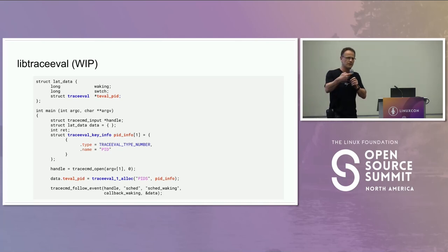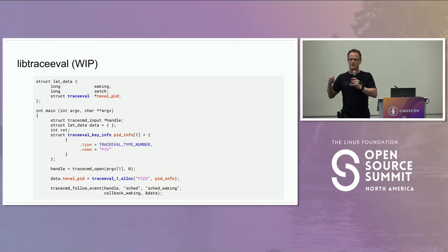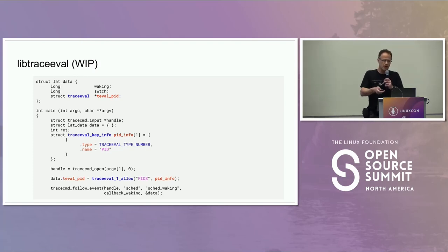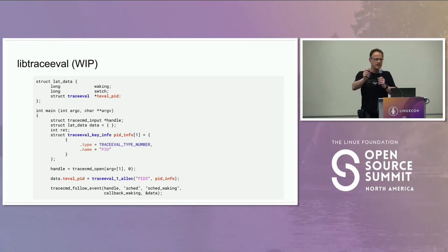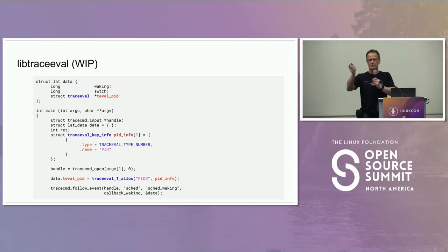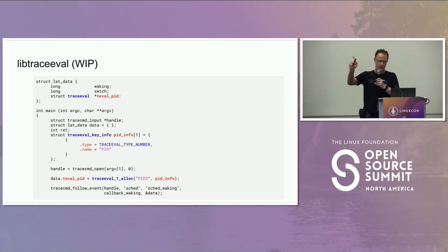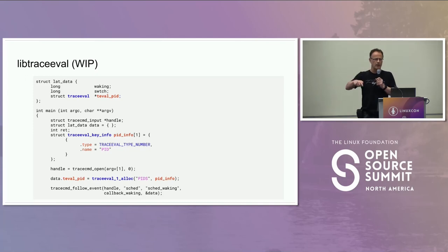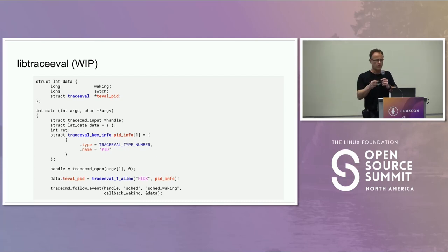I'm going to show TracyVal, which is still in development on GitHub and not yet stable or documented with man pages. It gives you ways of processing data where it does the accounting for you. Here I define a key — PID info — with type 'number' and name 'PID'. I allocate a TracyVal structure with one key using tracyval_one_alloc, passing in the PID info, which gives me a handler for this TracyVal structure.